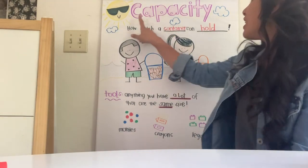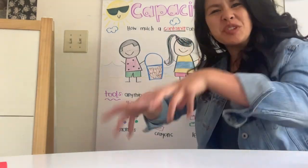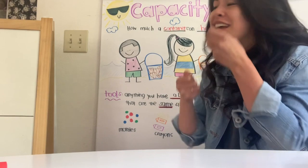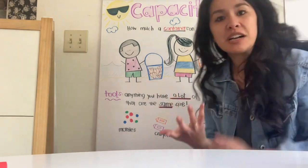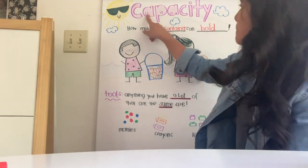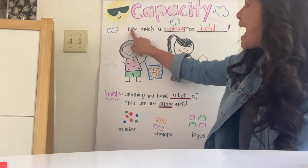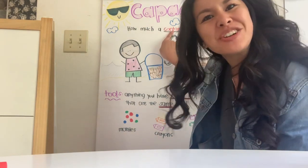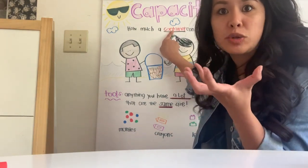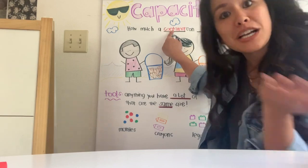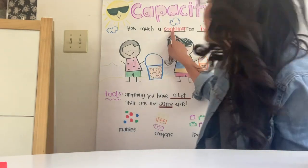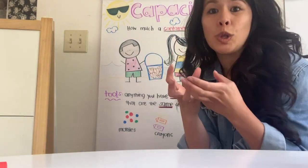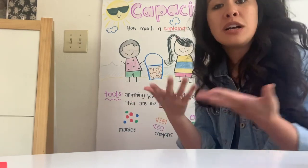We're going to be talking about capacity. Can everyone say capacity, like you're holding something? Because we're going to talk about what capacity means. Capacity is how much a container can hold. A container is anything that you can hold things in — it could be a box, it could be a cup, it could be a spoon. So capacity is how much a container can hold.